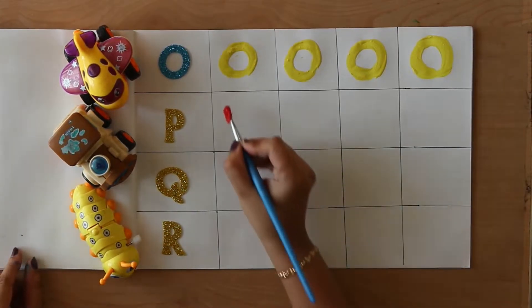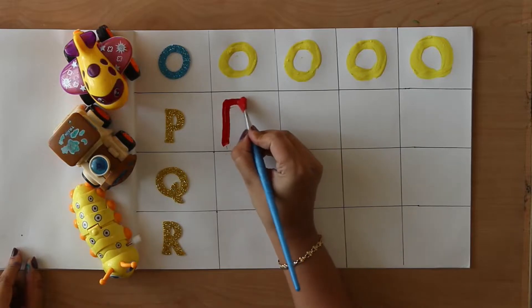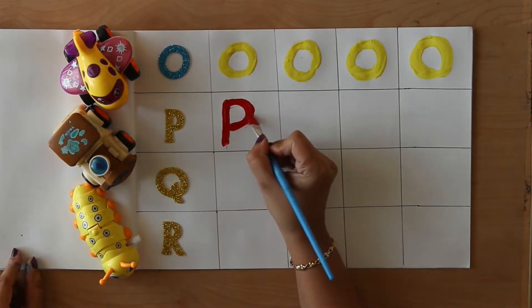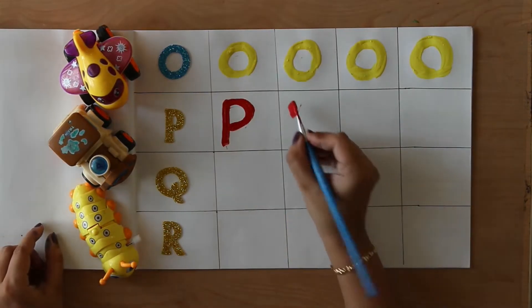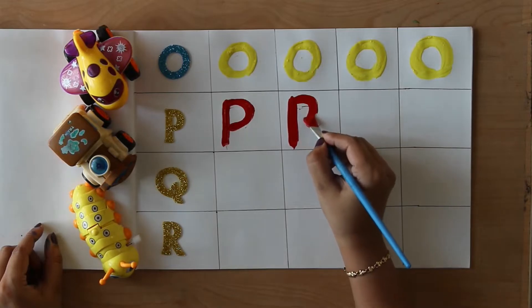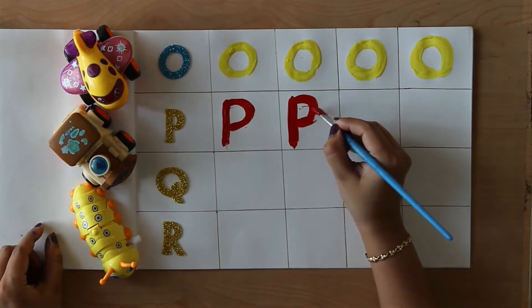Red color. P. P for peacock. Peacock means Moor. P. P for parrot. Parrot means Tota.